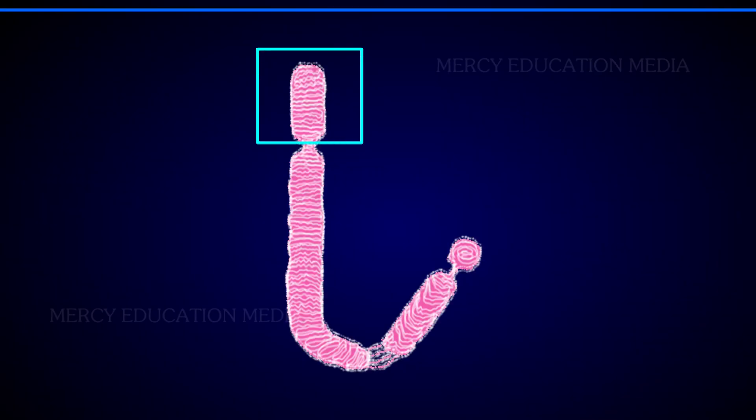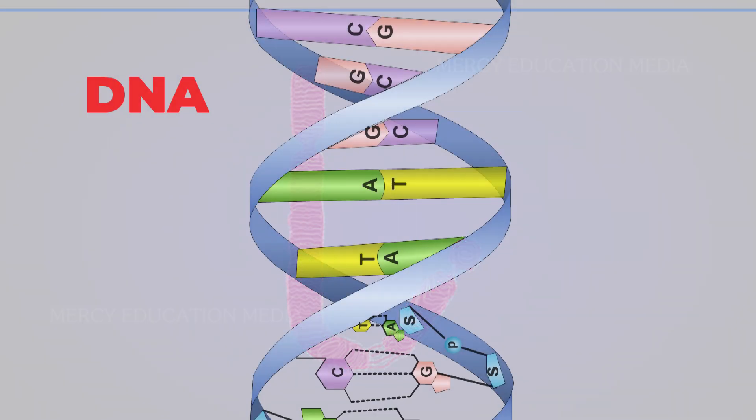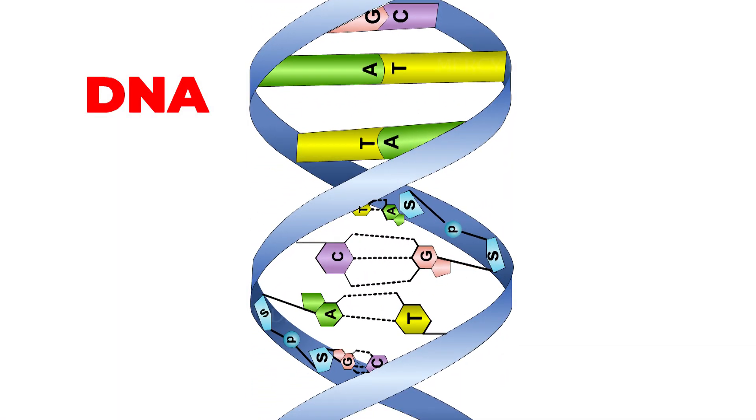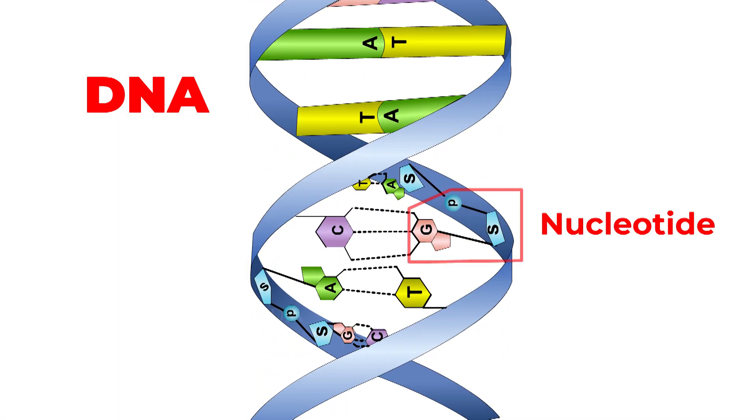Telomere is the terminal part of the chromosome. The DNA of the telomere has a specific sequence of nucleotides.